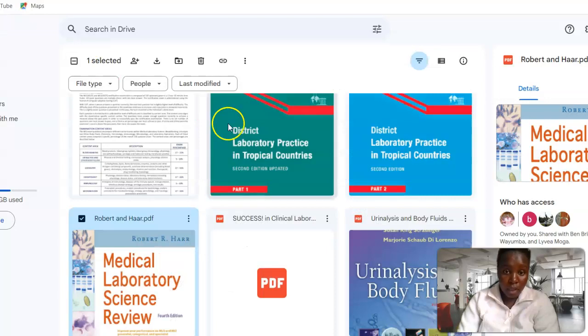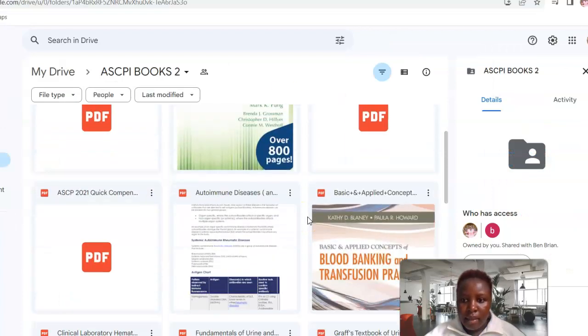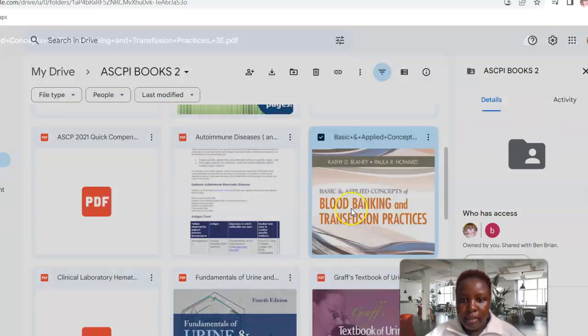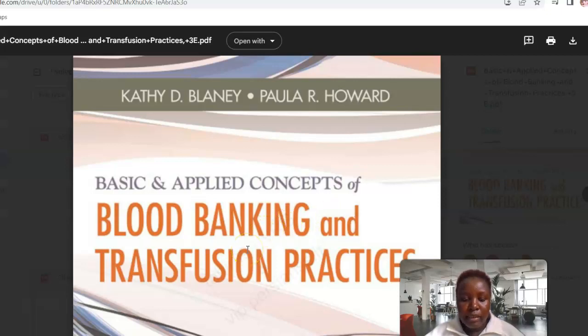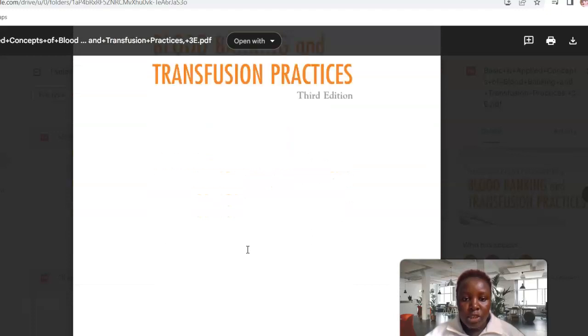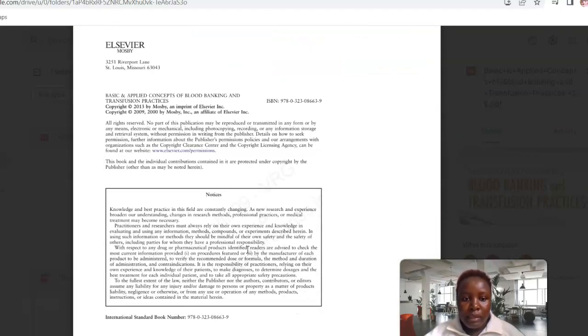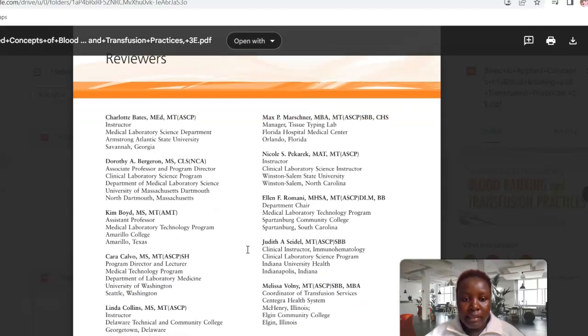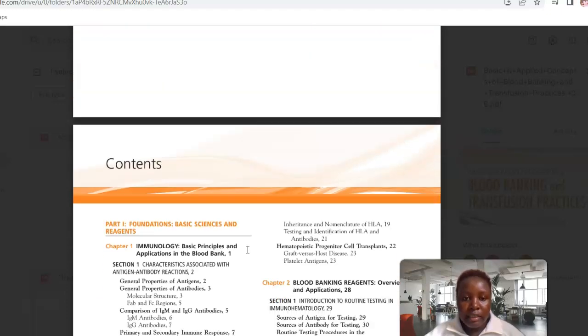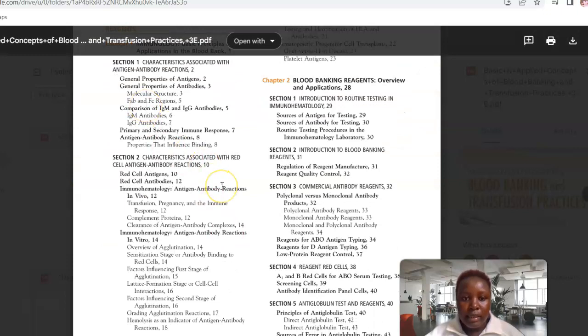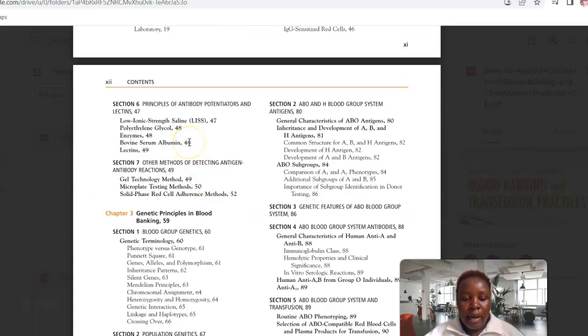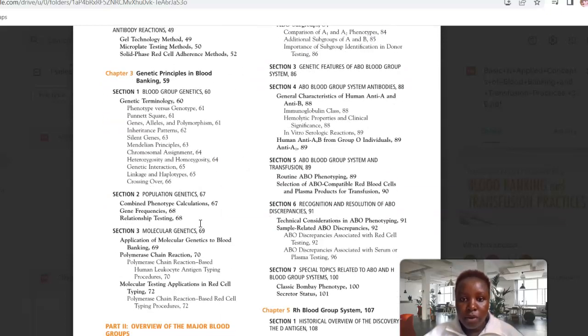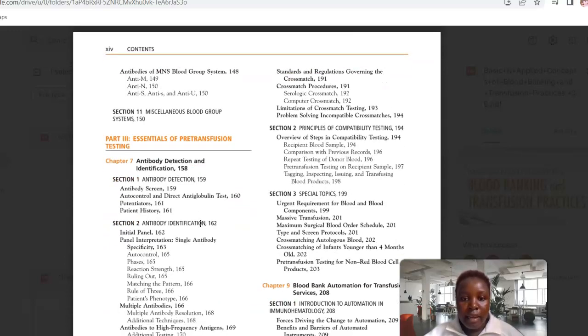Another good book is Blood Banking and Transfusion Practices by Kathy. This one will highlight all your blood banking topics and I found it to be a very good book as it explains all the topics that you need to know, including the antibody panels. As you can see, it has a lot of topics that are incorporated in blood bank. We have principles of antibodies, general principles in blood banking, genetic principles, the blood group system, and every other thing you need.